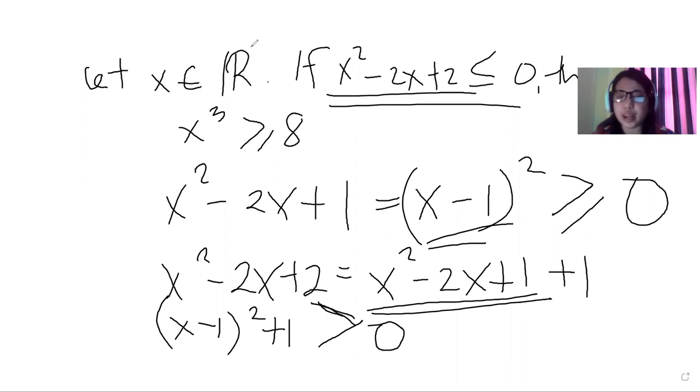Remember, we do not have the equal sign anymore, because if the value of x is equal to 1, then 1 - 1 equals 0. Therefore, adding it with 1, 0 + 1 equals 1, which is higher than 0.